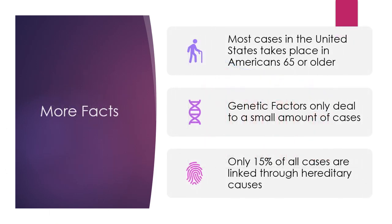Here are some extra facts about Parkinson's disease. Most cases in the United States take place in Americans that are 65 or older. Genetic factors only account for a small amount of cases, and only 15 percent of all cases are linked through hereditary causes, although we're not too sure exactly what causes Parkinson's disease.